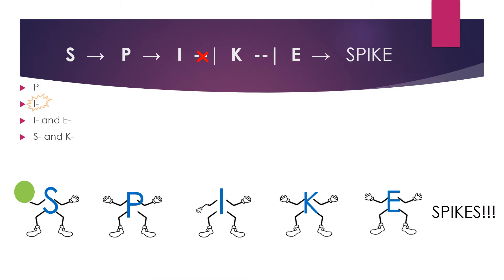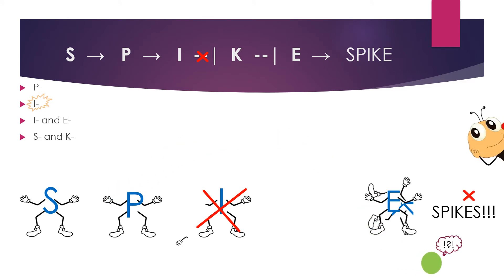In the second case, I is the mutated protein, so S produces P, but I is either missing entirely or can't function. When this happens, the pathway is disrupted because there will be no way to inhibit K from blocking E. So no spikes are produced in this mutation either.